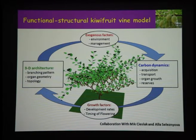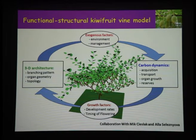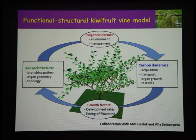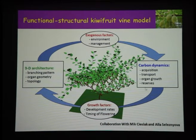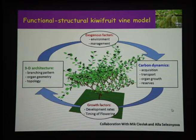Within the plant structure, we model the movement of carbon through the system from its acquisition: light comes to the leaves, we get photosynthate, then we look at how that is transported around the plant and the consequent organ growth. We can also look at reserves and other factors. Carbon dynamics is just one area — there are others. Carbon has an impact on growth factors, developmental rates, and timing of flowering, and we get back to our architecture. So we have a continuous circuit.